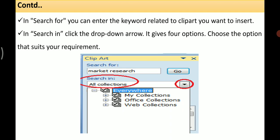In the Search For field, enter a keyword related to the clip art you want to insert. A related keyword should be given so that relevant results are obtained. In the example shown in the image, the keyword entered is 'market research'.